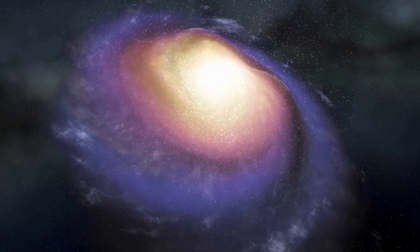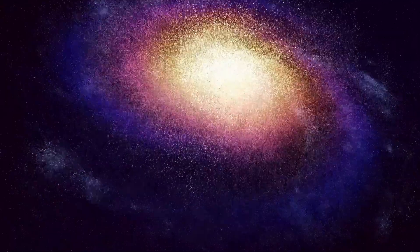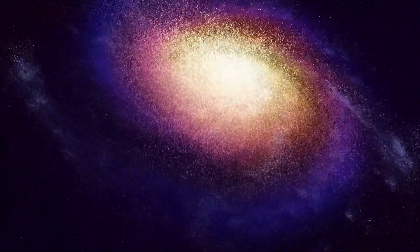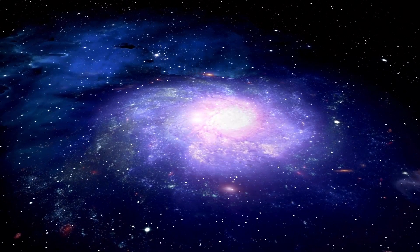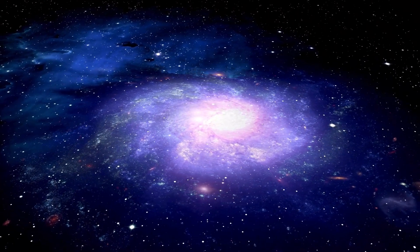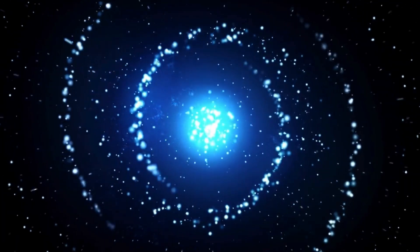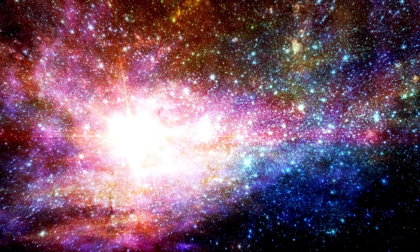Recent observations have suggested that Betelgeuse might be in a late phase or nearing the end of the core carbon burning process. This stage involves the conversion of carbon into heavier elements like oxygen and magnesium. If this is indeed the case, experts predict a core collapse leading to a supernova explosion could occur within a few tens of years. However, the exact stage of Betelgeuse's evolution remains challenging to determine, and uncertainties persist.